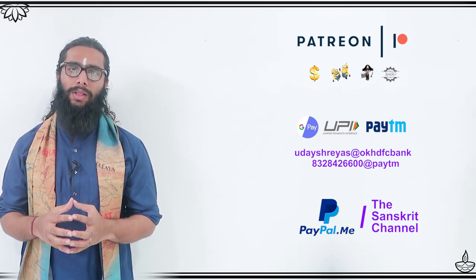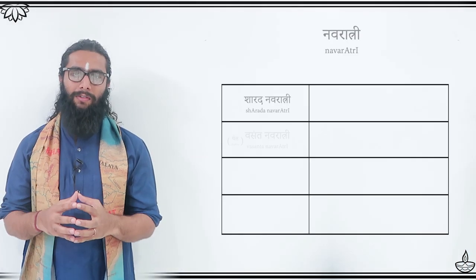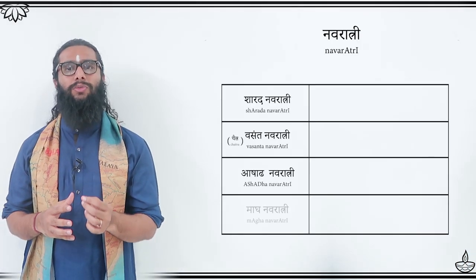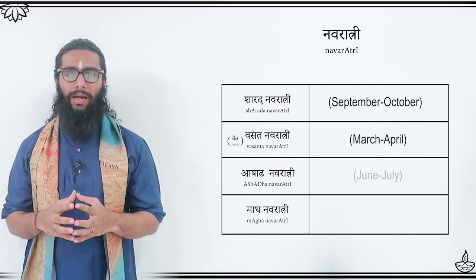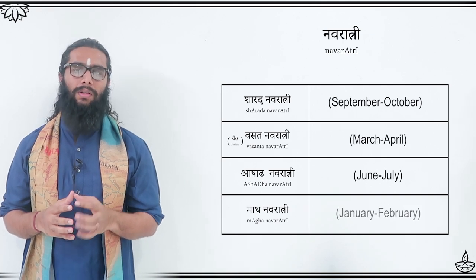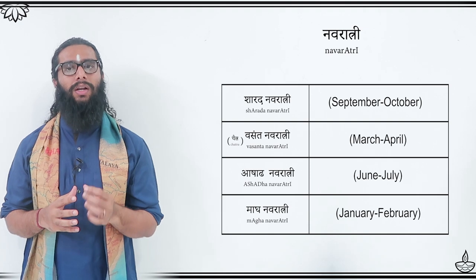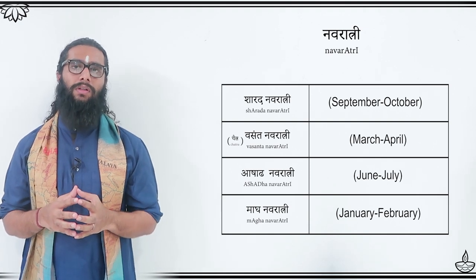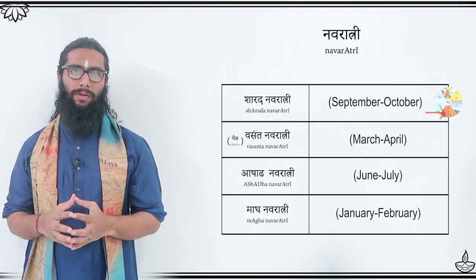This table lists out the 4 Navaratris and the transition times of nature they represent. As we see, the first of them is Sharadiya Navaratri, or Sharana Navaratri, which is a festival celebrated just after the monsoon season.